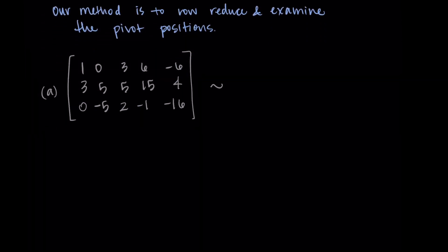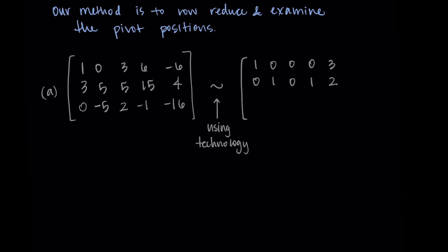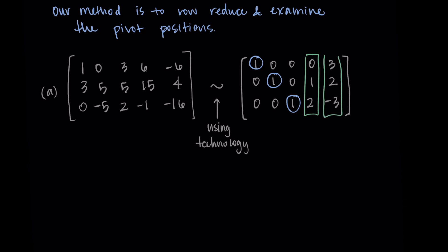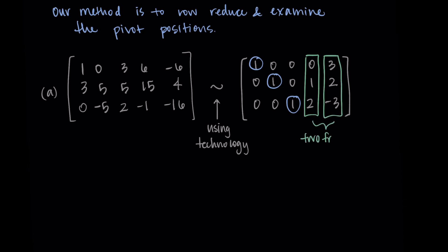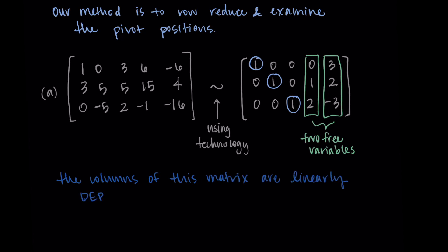Looking at our first matrix, I'm going to use technology to row reduce this, and I'm getting the following matrix: 1, 0, 0, 0, 3 in the first row; 0, 1, 0, 1, 2 in the second row; and 0, 0, 1, 2, negative 3 in the third row. We have three pivots, so the first three columns have pivot positions, and the final two columns correspond to free variables. This tells me that those fourth and fifth columns can be written as linear combinations of the other ones. So the columns of this matrix are linearly dependent — those two columns are redundant and can be written as linear combinations of the first three.